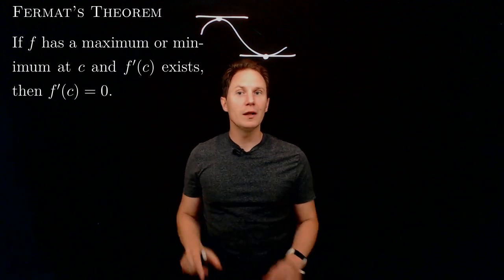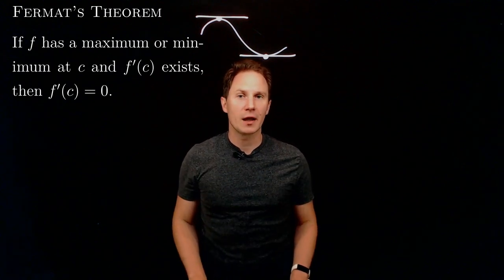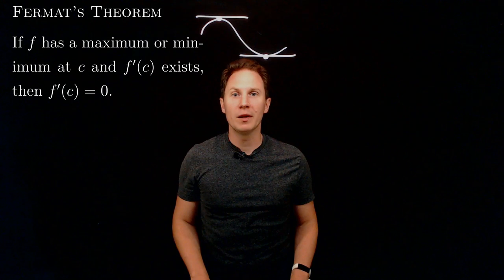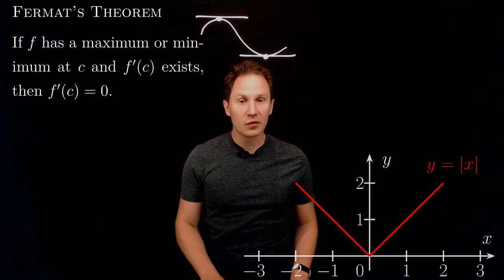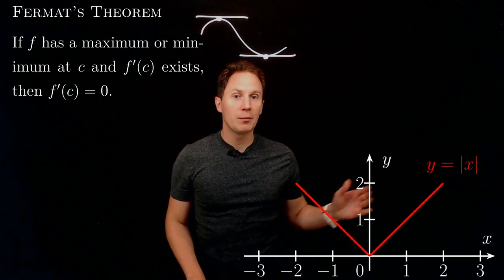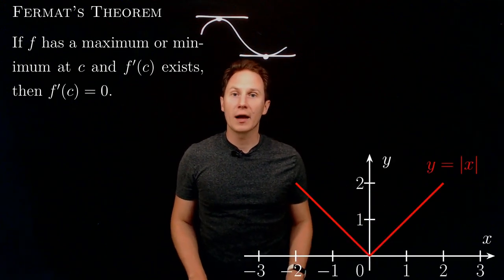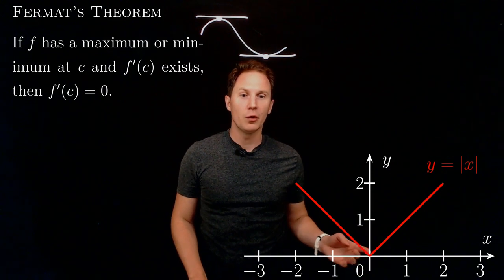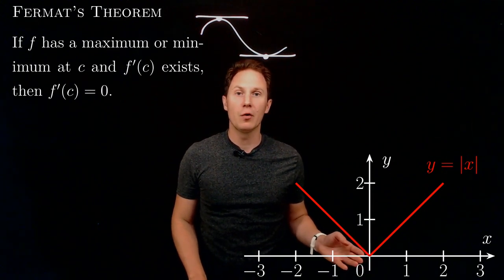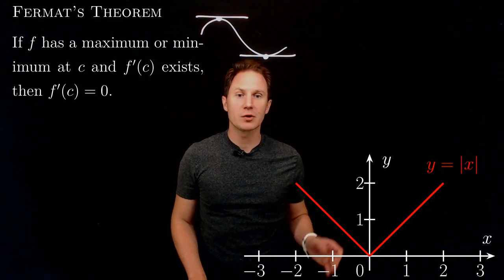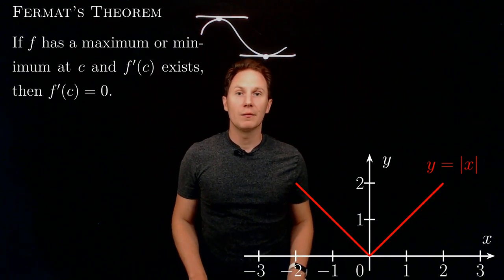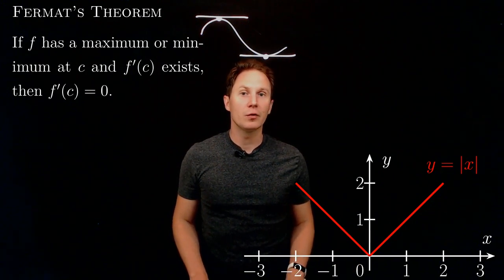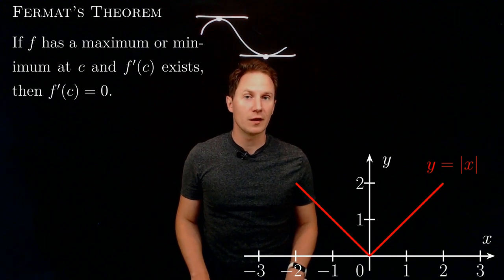This is not the only way a function can have a maximum or a minimum at a point c. Just consider the absolute value of x, which clearly has a minimum value of zero at x equals zero, but this function has no derivative at zero — the derivative at zero does not exist.